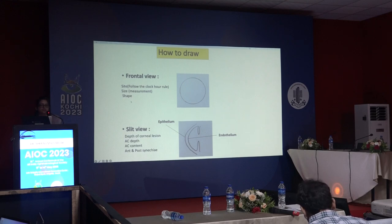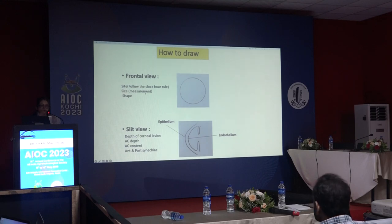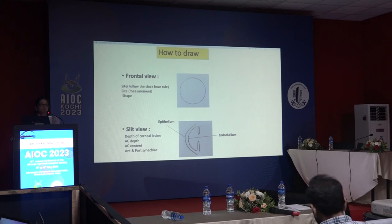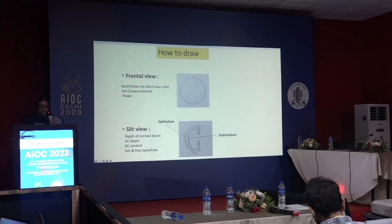When drawing corneal pathology, always draw in two views: frontal view and slit view — frontal view alone is not sufficient. In the frontal view show site, size, and shape of the lesion using a clock hour rule; size is shown in two meridians of maximum diameter. In the slit view show depth of the corneal lesion, anterior chamber depth and content (hypopyon, hyphema), and iris details such as anterior and posterior synechiae.